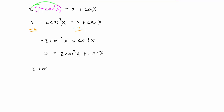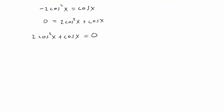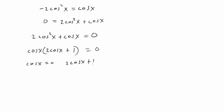We can rewrite this as two cosine squared x plus cosine x equals zero. We can't combine these because they have different exponents, so we factor out the common factor cosine of x. Taking one out of the first term leaves two cosine of x, and taking out the cosine leaves plus one. So we have cosine x times two cosine x plus one, and we set each factor equal to zero.